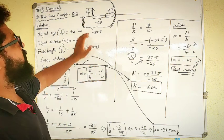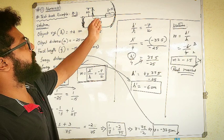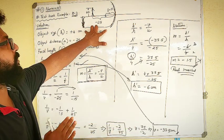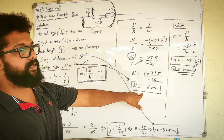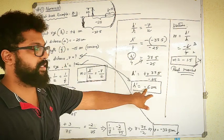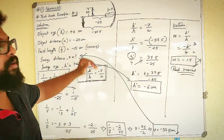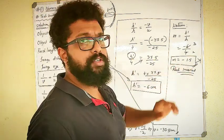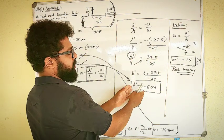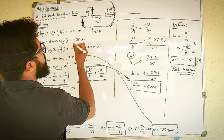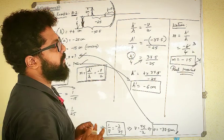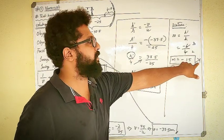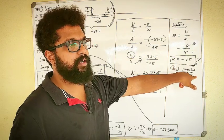To understand this practically: the object of size 4 cm was placed 25 cm in front of the concave mirror. The image was formed at 37.5 cm from the mirror. The image size of 6 cm is larger than the object size of 4 cm, so the object is smaller than the image. The minus sign tells us the image is inverted — below the principal axis. Magnification is minus 1.5, confirming the image is real and inverted.